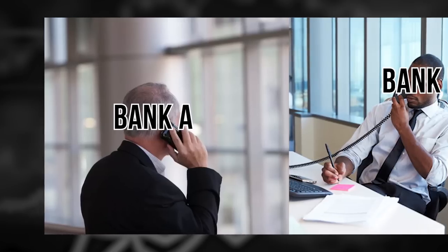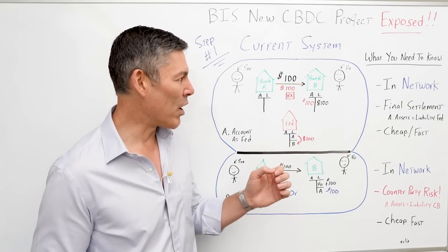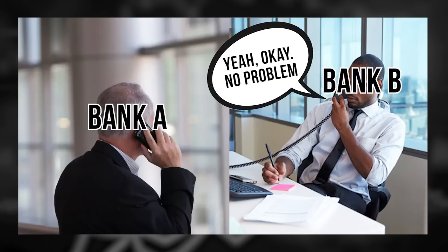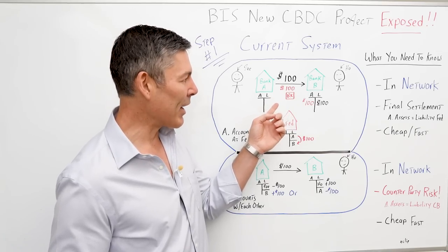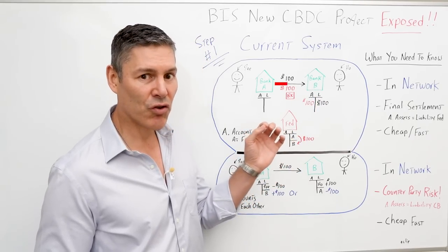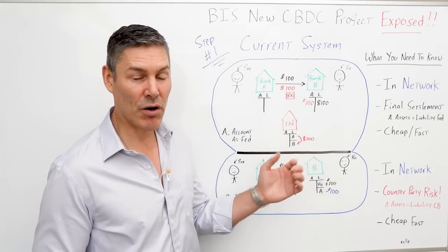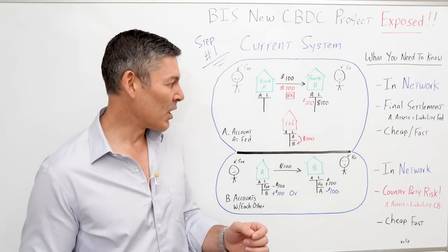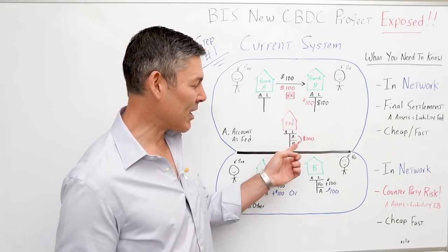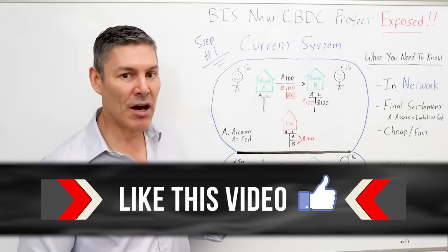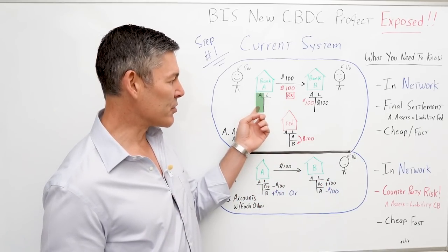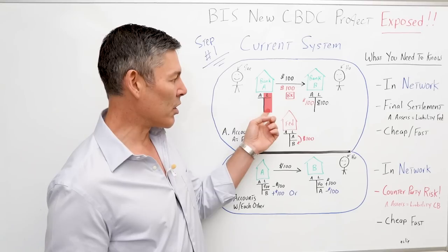Bank A calls up Bank B and says they've got to transfer $100 and put it in the Ho guy's account. Bank B says no problem. So that $100 represented by the black goes down onto the liability side of Bank B's balance sheet. But since they're transferring a liability, they also have to transfer an asset. What happens on the Fed's balance sheet is they transfer $100 from A's account down to B's account. At the end of the transaction, Bank A no longer has the $100 in bank reserves as assets, and they no longer have that $100 liability.